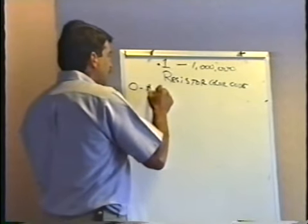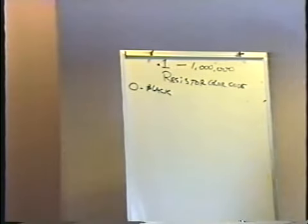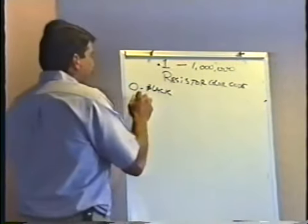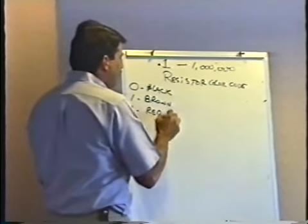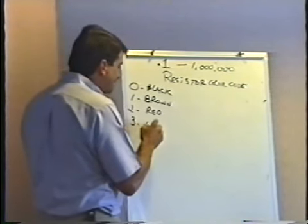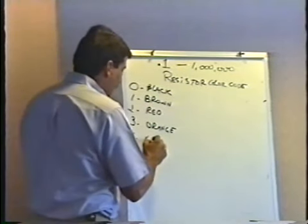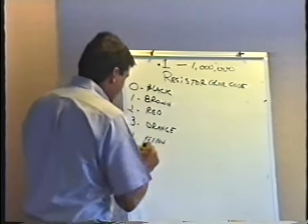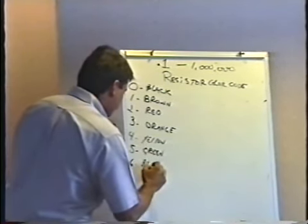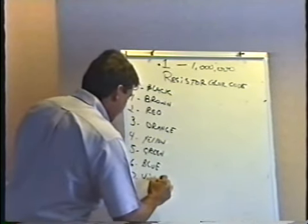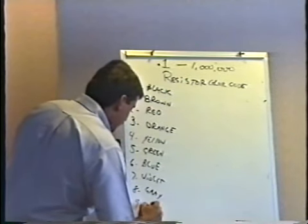Each color represents a number: zero is black, one is brown, two is red, three is orange, four is yellow, five is green, six is blue, seven is violet, eight is gray, and nine is white. These are in ascending chromatic order — the same way a rainbow is set up.